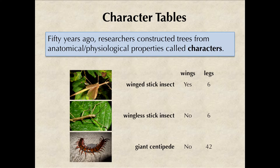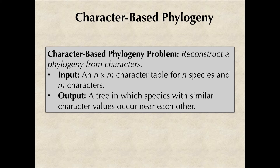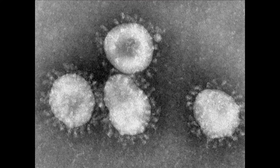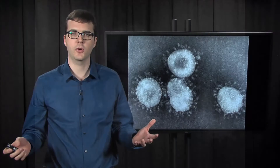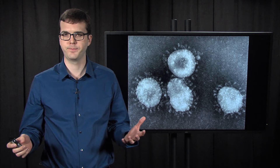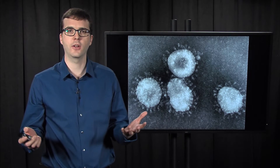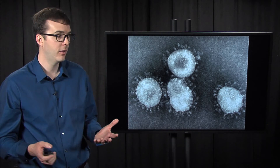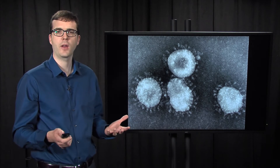This brings us to the problem of trying to reconstruct a phylogeny from a character table. Of course, this is currently not a well-defined problem. In the modern era, constructing a phylogeny from anatomical characters seems crazy in some circumstances — just imagine trying to construct a coronavirus phylogeny from anatomical characters.